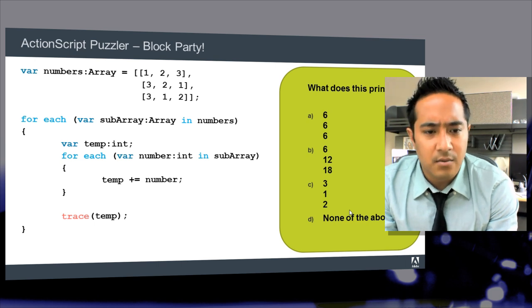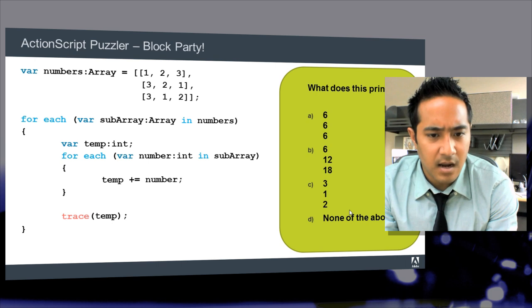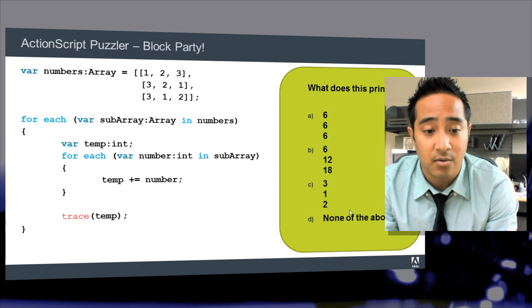Then we see another for each loop which iterates over all of the individual numbers in each of the subarrays. It looks like it adds up all of these numbers, stores them in temp, and before the outer loop exits, it prints the sum. So it looks like the entire program simply outputs the sum of the digits in each of the subarrays.